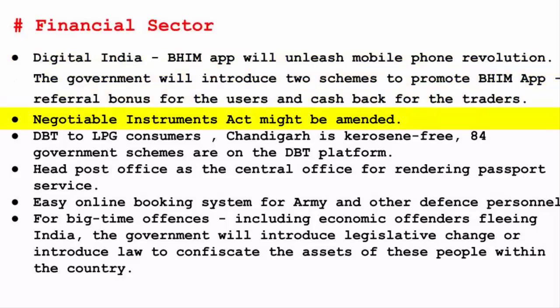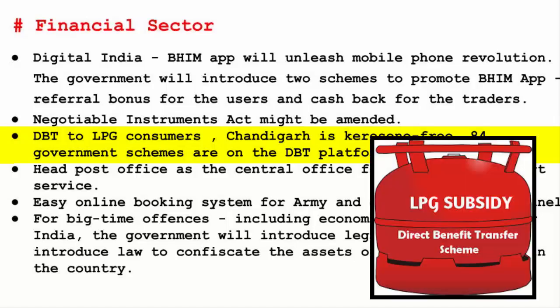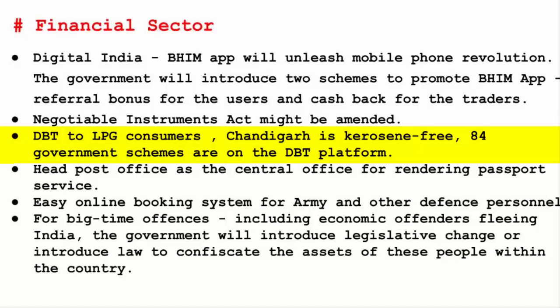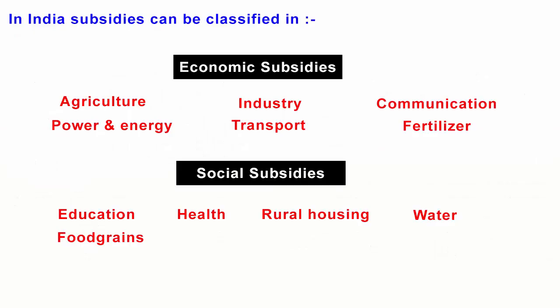The Negotiable Instruments Act 1881 — which defines law relating to promissory notes, bills of exchange, and cheques — may be amended. On Direct Benefit Transfer: Chandigarh is now kerosene-free, and 84 government schemes are on the DBT platform. When you book your LPG, you get the subsidy amount transferred back to your bank account. Currently, there are 84 such government schemes where the subsidy amount is transferred to the beneficiary's account, including education, health, fertilizer, power, oil, food grains, kerosene, and LPG.